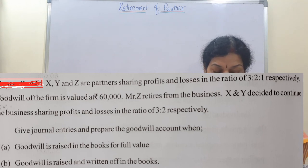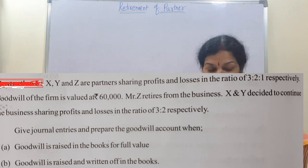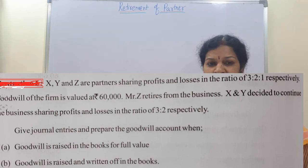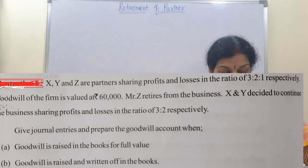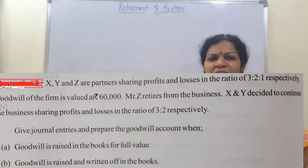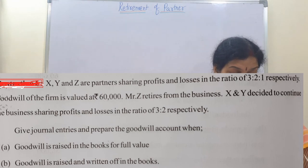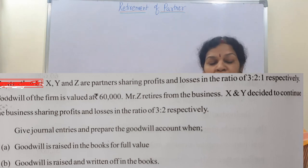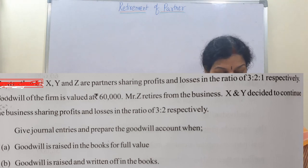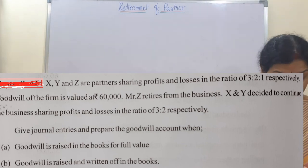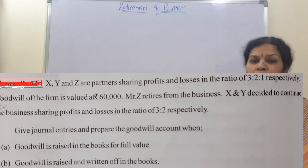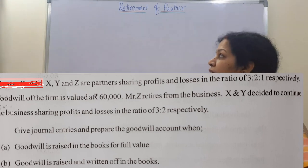Z retires from the business. X and Y decided to continue the business sharing profits and losses in the ratio of 3:2 respectively. As per the elimination method, the earlier sharing ratio was 3:2:1 and the new ratio is 3:2. Give journal entries and prepare the goodwill account for two cases: when goodwill is raised, and when goodwill is raised and written off.